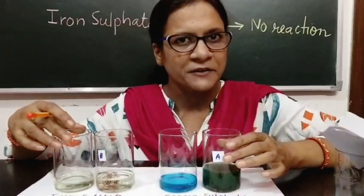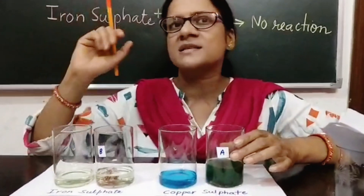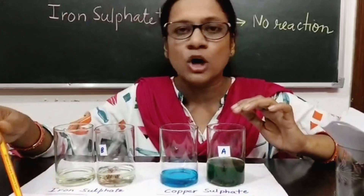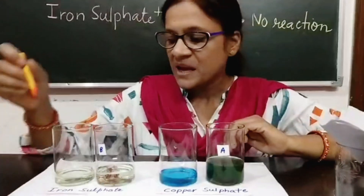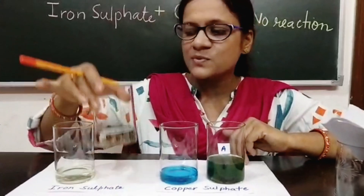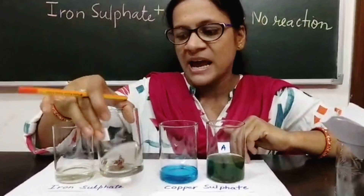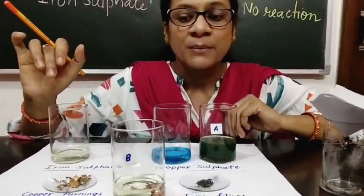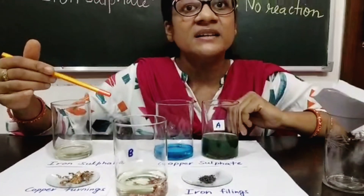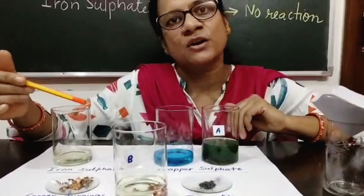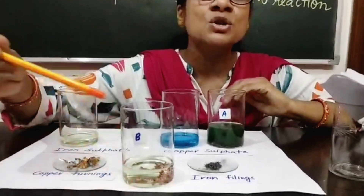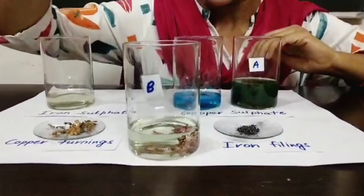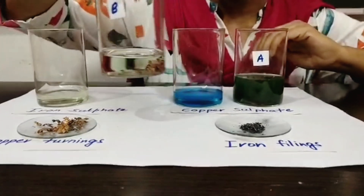We will check the results after 15 minutes. We just discussed theoretically that the reaction between iron sulphate and copper turnings does not take place. And we can see here that the iron sulphate solution is as it is — there is no reaction taking place because iron is more reactive than copper, and copper is not able to displace iron. So it remains as iron sulphate and copper only.